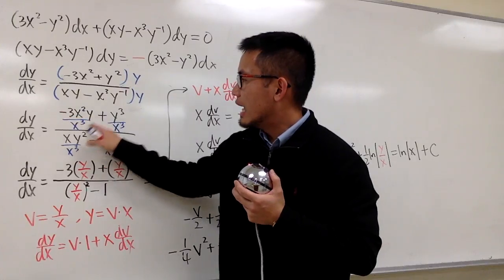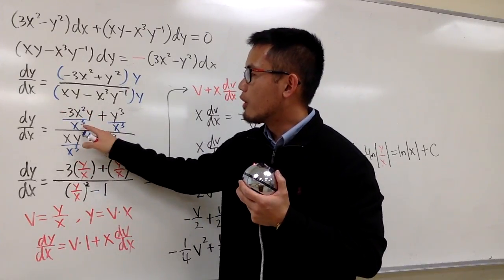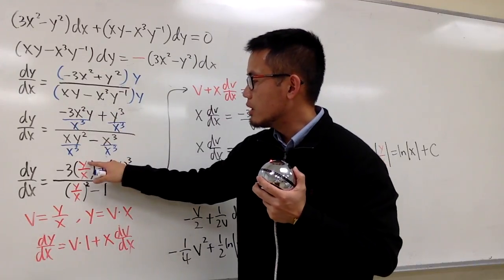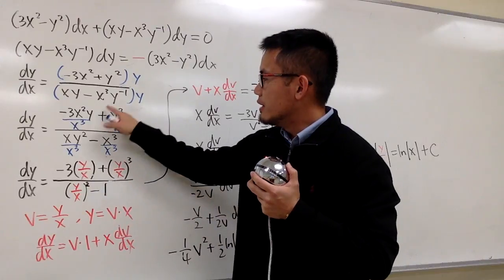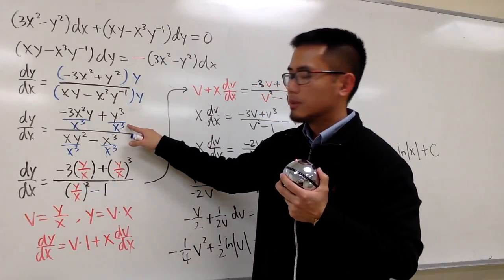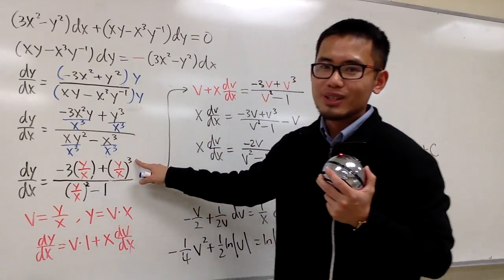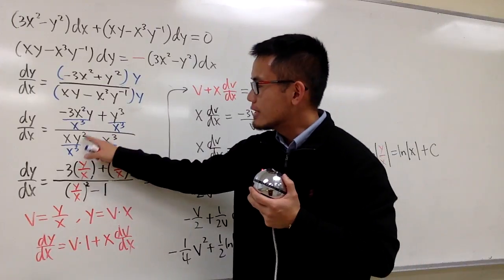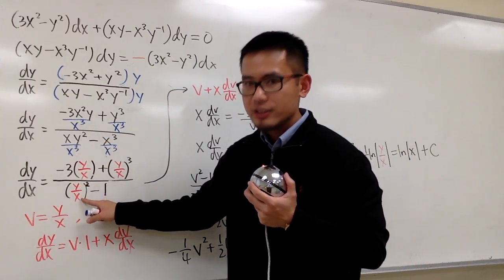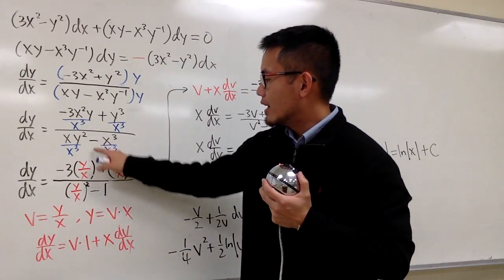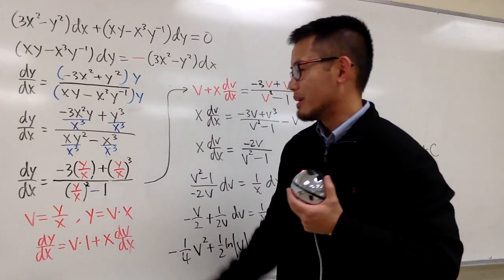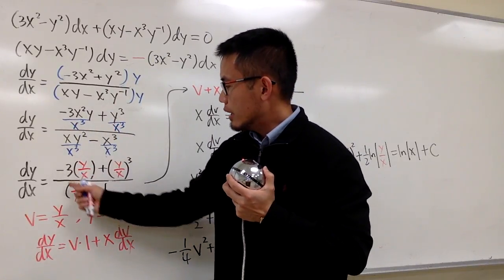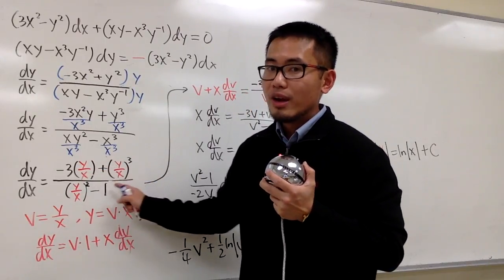You will see that here we have negative 3, and x²/x³ means we have an x in the denominator, with y still on top. So that term becomes negative 3 times (y/x). For the next term, we have y³/x³, which we can write as (y/x)³. And for xy²/x³, we get y²/x², which we can write as (y/x)². Finally, x³/x³ is just 1, so we have minus 1. The entire right-hand side is now expressed purely in terms of y/x.